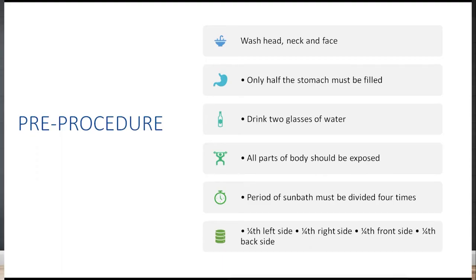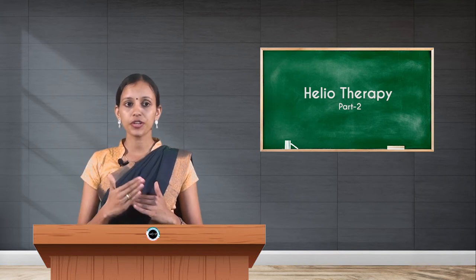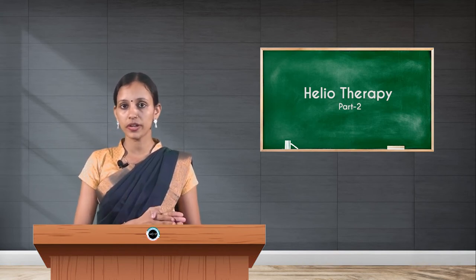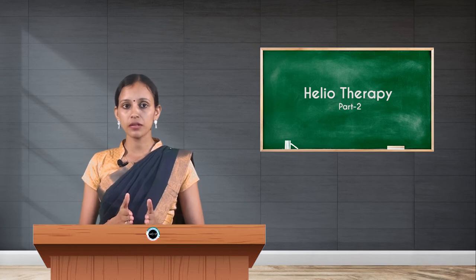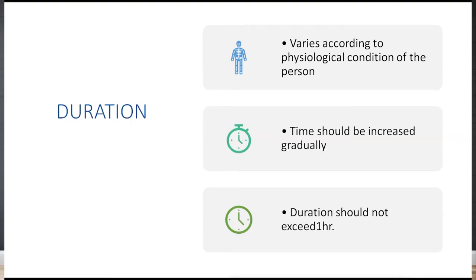All parts of the body should be exposed; you must wear minimum clothes so that maximum body parts are exposed to natural sunlight. The period of sun bath can be divided into four parts. One fourth of the time you can expose the left side of the body, one fourth the right side, then the front side, and similarly the back side, instead of exposing all body parts at the same time.